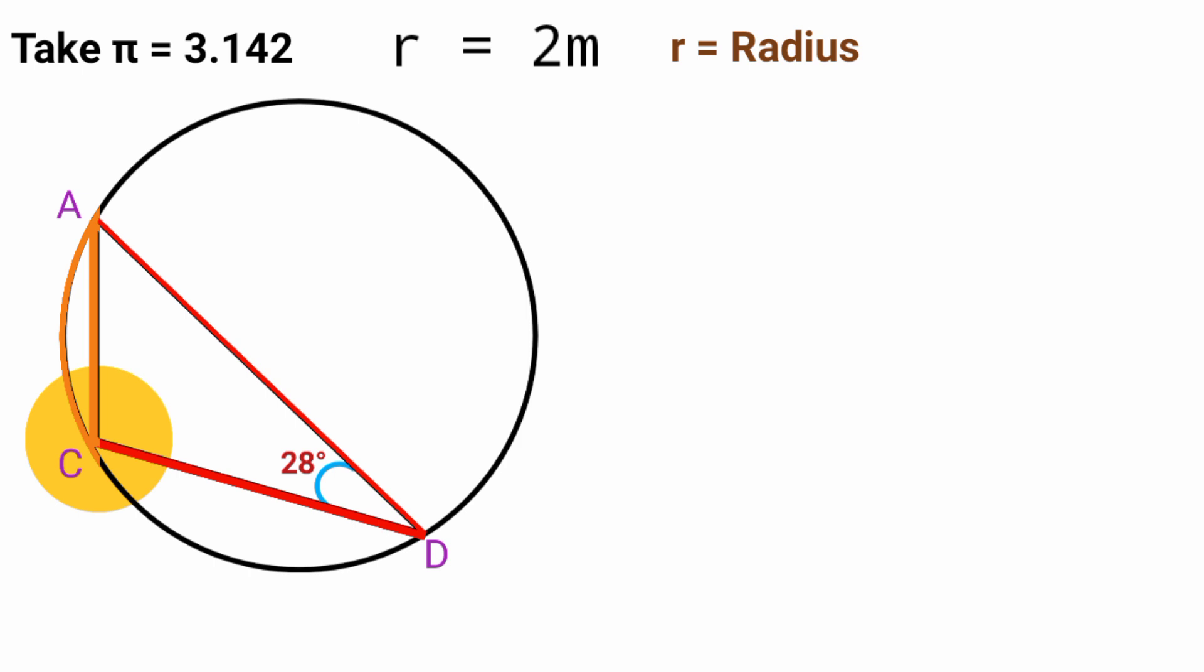So we take the diameter now. We can introduce another line here from here to here. So now we're having another angle subtended by the same arc to the circumference with one of the lines being the diameter. So now since this is 28 degrees, this angle here will also be 28 degrees because all angles subtended by an arc to the circumference in the same segments are equal.